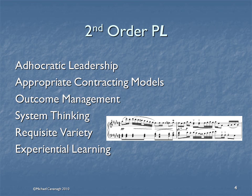Each of these second-order tools is described in other videos in this series at greater length. But briefly: adhocratic leadership is leadership that is flexible, where the repertoire is broad enough to deal with whatever happens, as opposed to bureaucratic leadership which has to follow process. We talk about appropriate contracting models — appropriate to the specifics of the project, its duration, its size, its complexity, and its uncertainty.